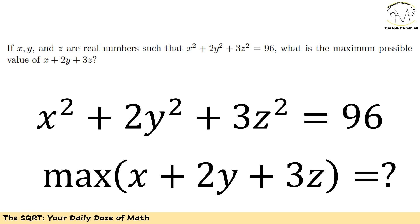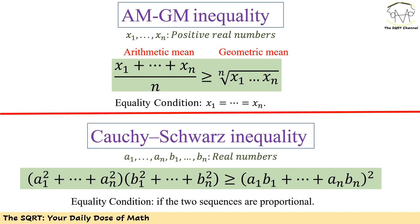Let's see how we are going to solve this problem. To solve it, I'm going to use an inequality because it's talking about the maximum possible value. We have two famous inequalities that I'm going to review, and then we will decide which one to use.